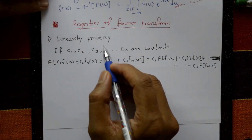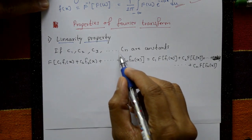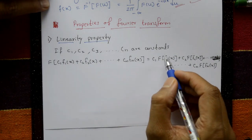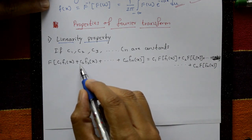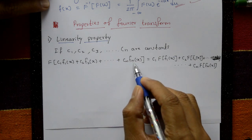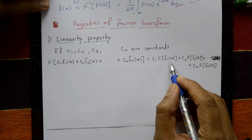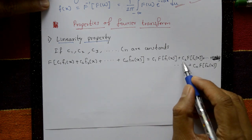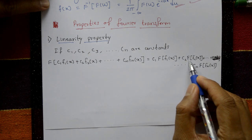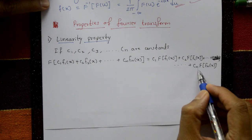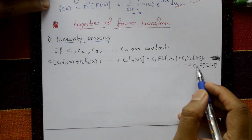Linearity property. If c1, c2, c3, and so on cn are constants, then F of c1 f1 of x plus c2 f2 of x plus so on cn fn of x is equal to c1 F of f1 of x plus c2 F of f2 of x plus so on cn F of fn of x. We prove the right hand side.